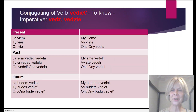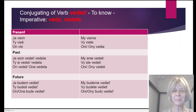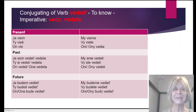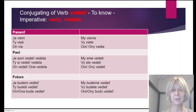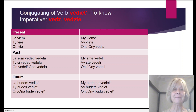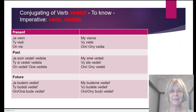And one more verb out of these 50 basic verbs — vedieť, meaning 'to know.' A very important word. The present tense is again a little different, but short, so it will be easy to learn by heart. Just repeat after me: Ja viem. Ty vieš. On vie. My vieme. Vy viete. Oni vedia.